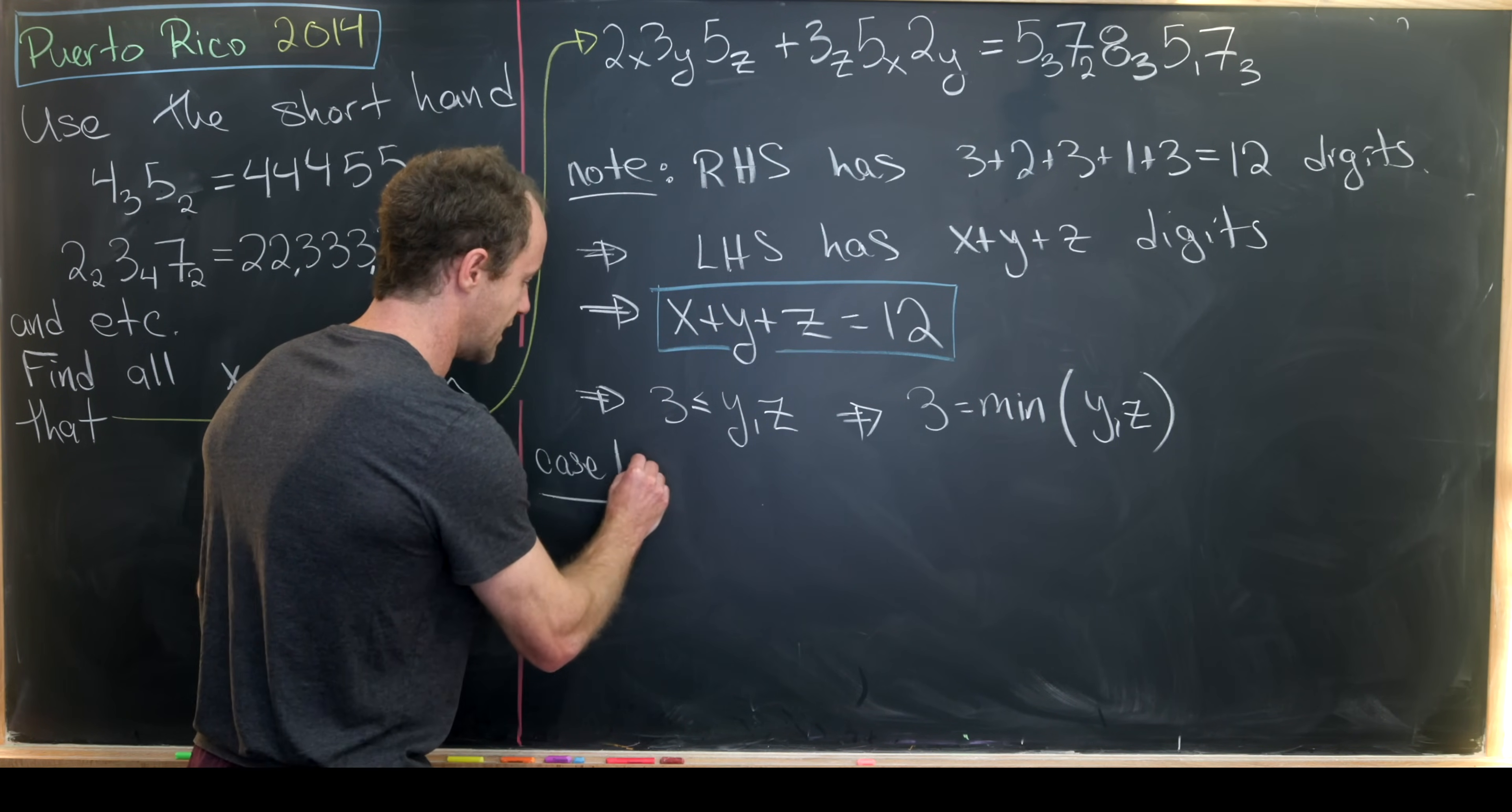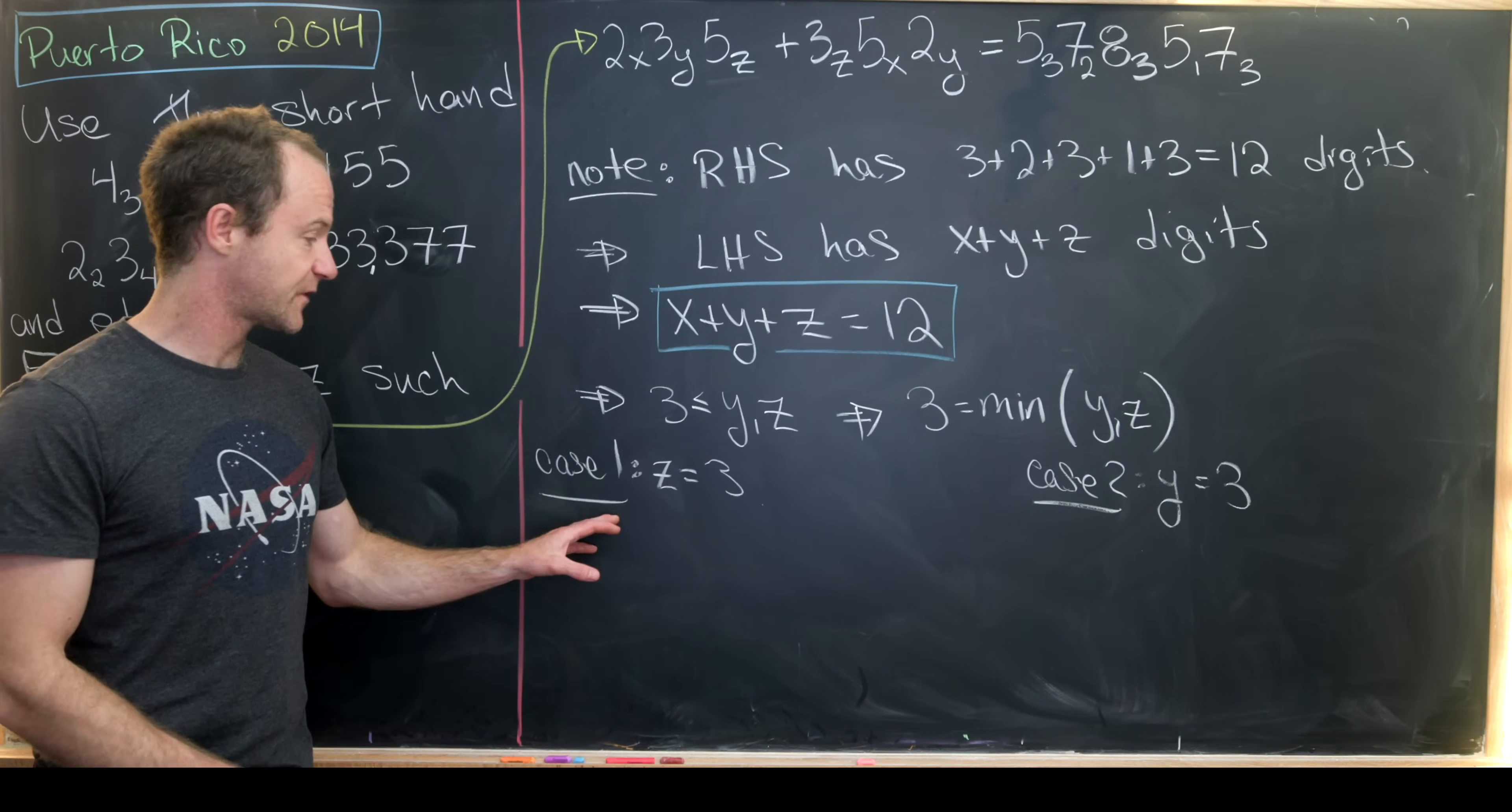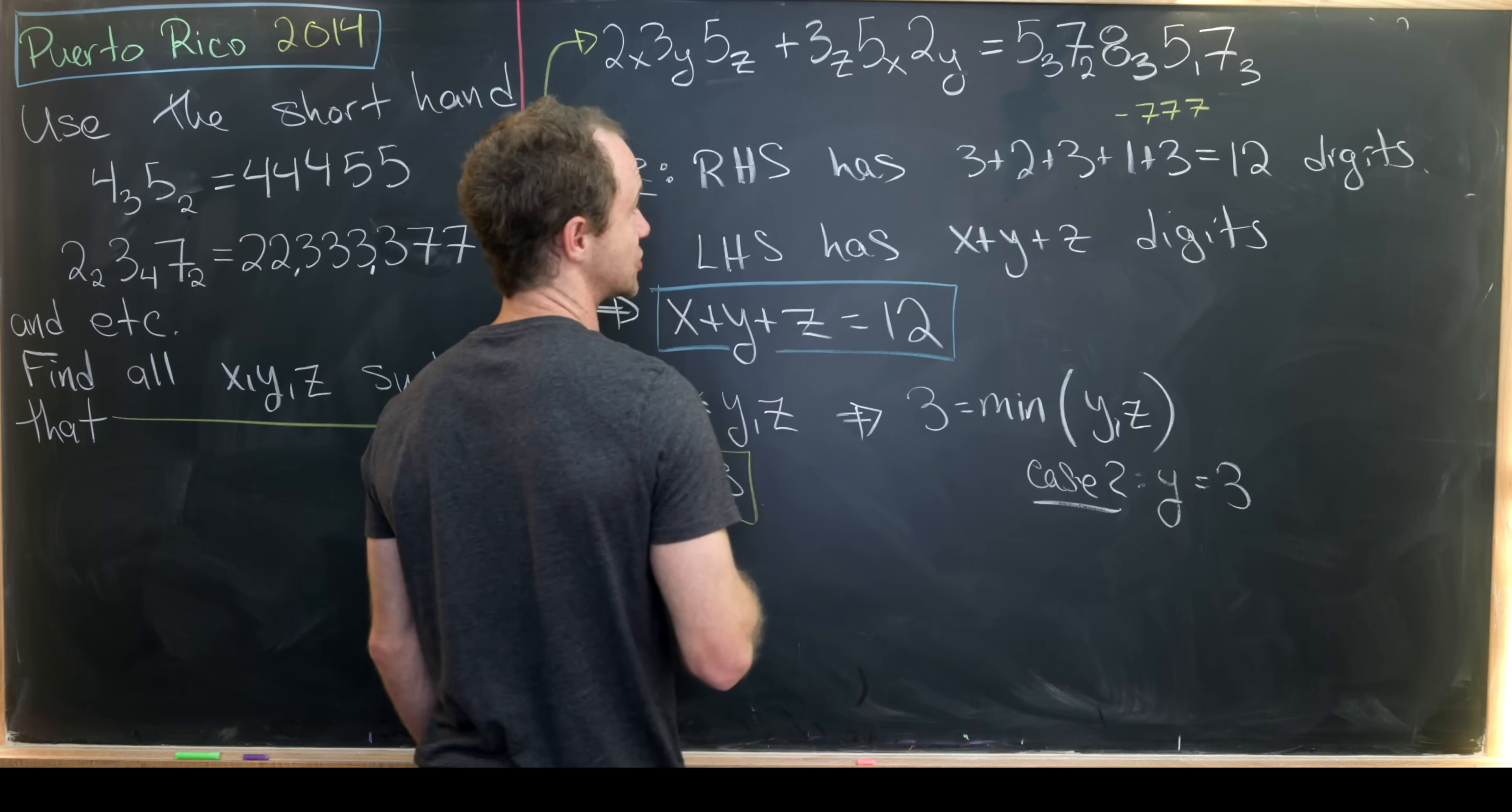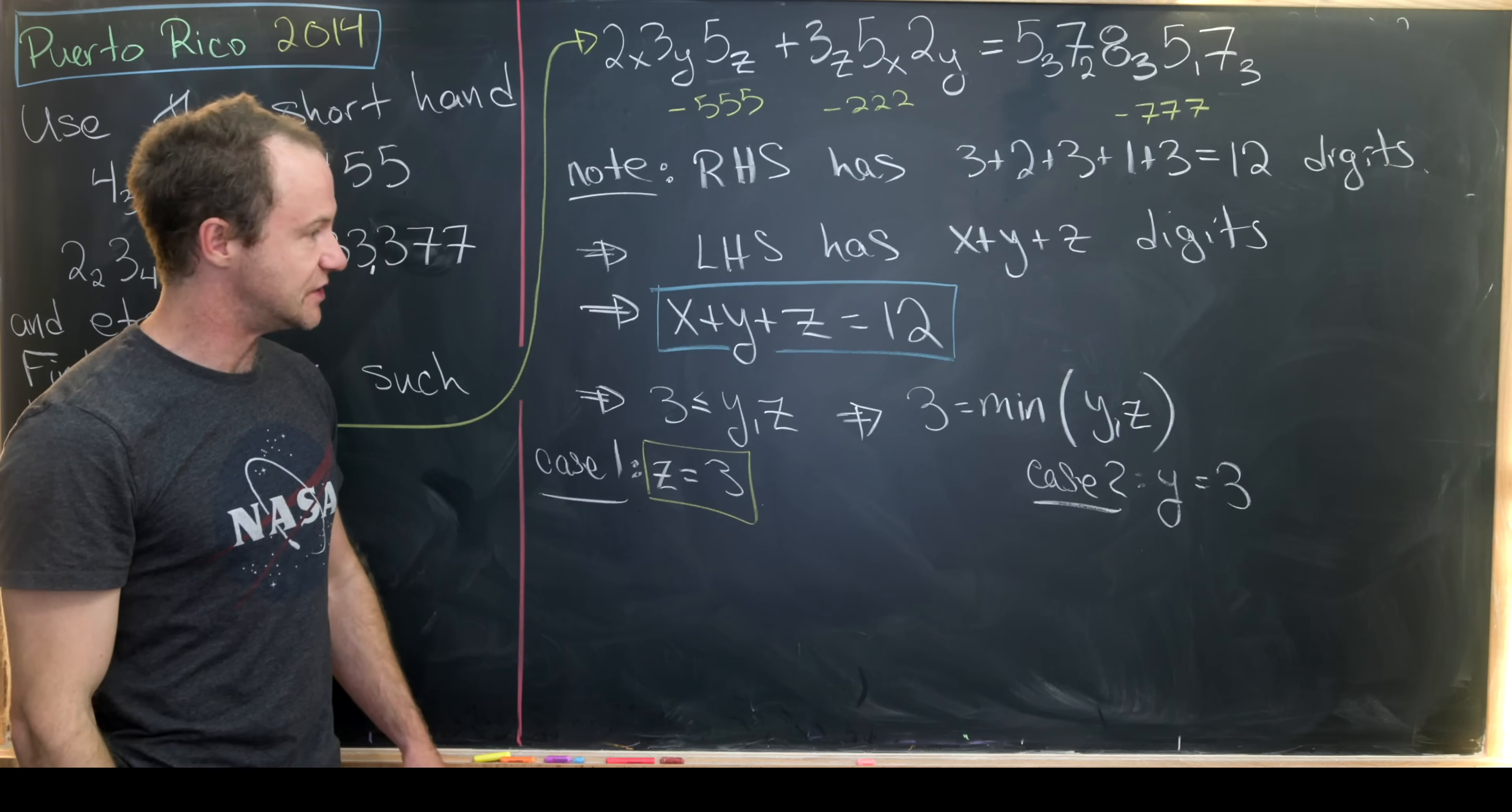That breaks it down into the following cases. Case number one would be z equals three, whereas case number two would be y equals three. Let's see what each of those gives us. In this first case when z equals three, we'll subtract 777 from both sides of the equation. On this side we'll subtract 222, and here we'll subtract 555. So that's going to give us a new equation.